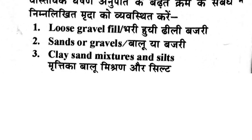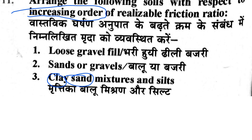If clay is mixed with sand or silt, the friction ratio becomes lower than pure clay. Then comes sand or gravel, and the lowest friction ratio is for loose gravel field, since loosely packed gravel has the least friction. So in increasing order: loose gravel field, then sand or gravel, then clay-sand mixtures, then clay and pits. Option A — one, two, three, four — is the correct answer.